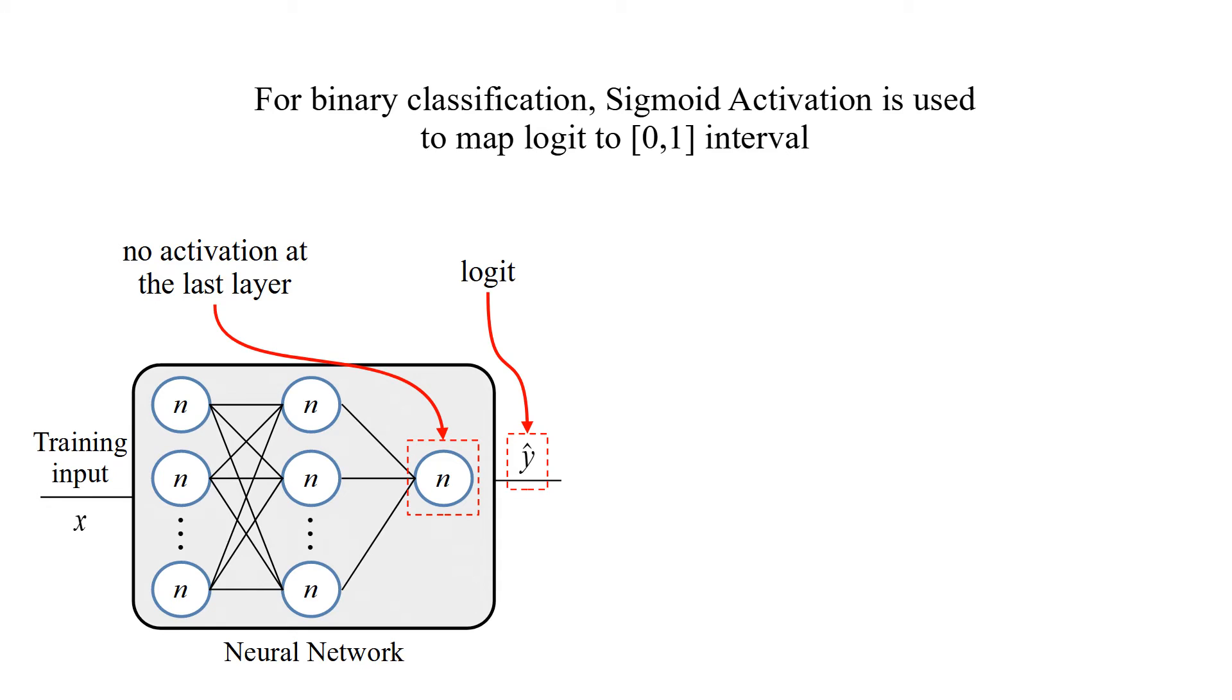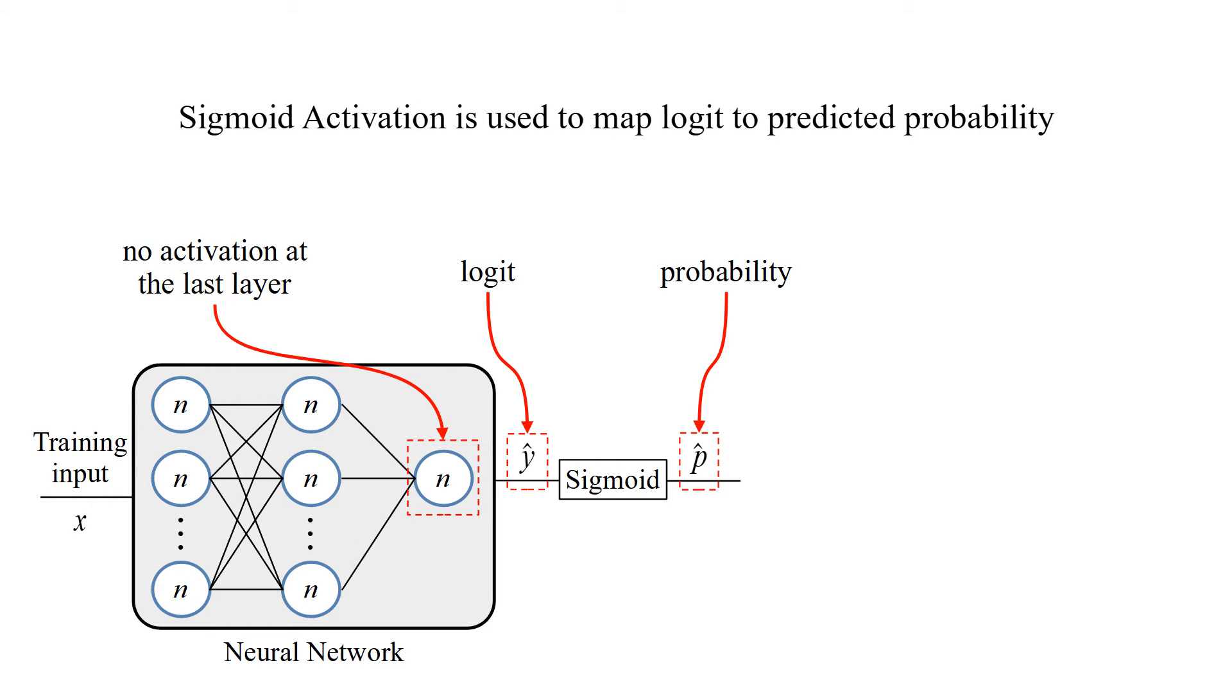For binary classification, sigmoid activation is used to map logit to 0-1 closed interval. Sigmoid activation is used to map logit to predicted probability. Here are the equation and graph of sigmoid function.